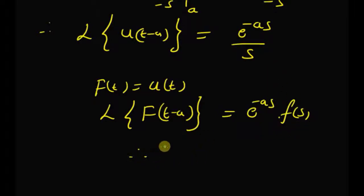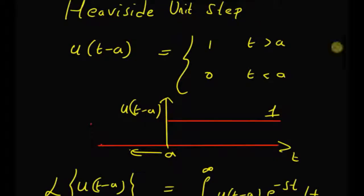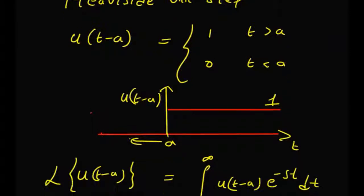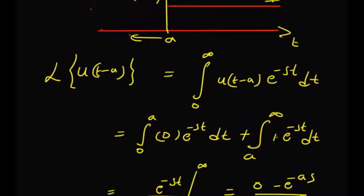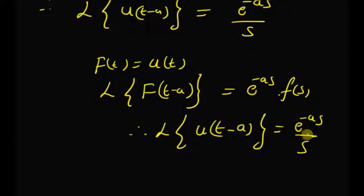Therefore, the Laplace transform of u of t minus a is equal to e to the power minus a s times F of s, and since F of s is 1 by s, we have e to the power minus a s by s. And clearly, for a equal to 0, the Heaviside unit step function is the same as the original unit step function u of t, and the Laplace transform is equal to 1 by s. Thanks for watching.